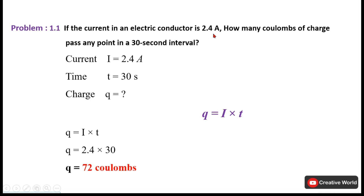Problem 1.1 states: if the current in an electric conductor is 2.4 ampere, how many coulombs of charge pass any point in a 30-second interval? The given data is current = 2.4 A and time = 30 s. Using Q = I × T, we substitute both values and the charge is 72 coulombs.